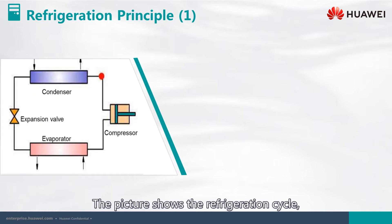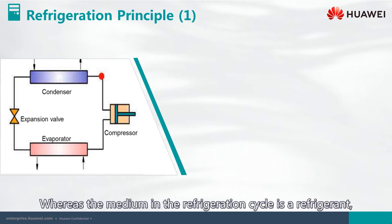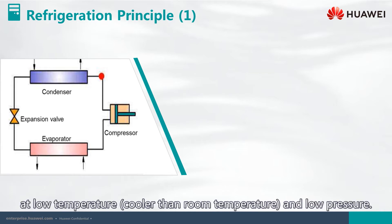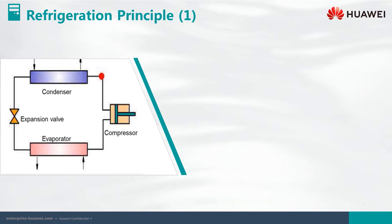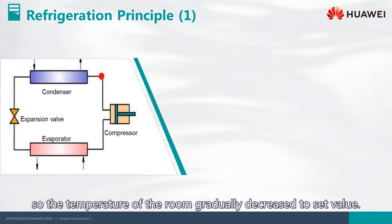The picture shows the refrigeration cycle, which includes four major components: evaporator, compressor, condenser, and expansion valve. The medium in the refrigeration cycle is a refrigerant. Refrigerant in the evaporator is a gas-liquid mixture at low temperature — cooler than room temperature — and low pressure. It absorbs heat in the room through the evaporator, so the temperature in the room gradually decreases to the set value.